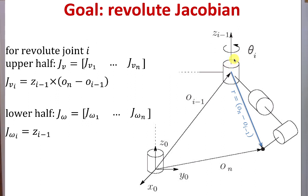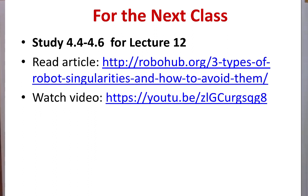So for the revolute joint, we take the cross product of z_{i-1} with the moment arm to the end-effector, scaled by theta-dot. The lower half of the Jacobian for a revolute joint is just z_{i-1} expressed in the base frame. For next class, read chapter 4.4 through 4.6, watch the video on robot singularities shown at the beginning of today's lecture. See you soon — stay classy.